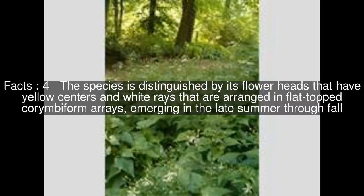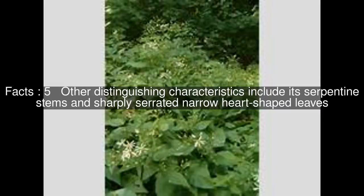The species is distinguished by its flower heads that have yellow centers and white rays, arranged in flat-topped corymbs, emerging in the late summer through fall. Other distinguishing characteristics include its serpentine stems and sharply serrated narrow heart-shaped leaves.